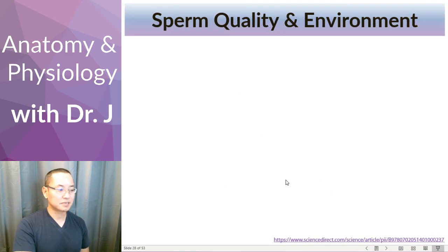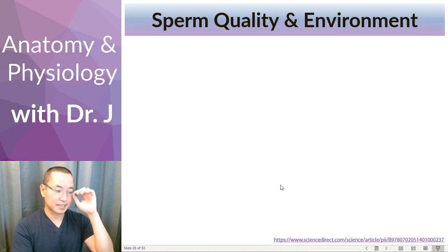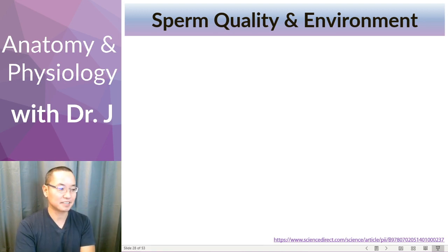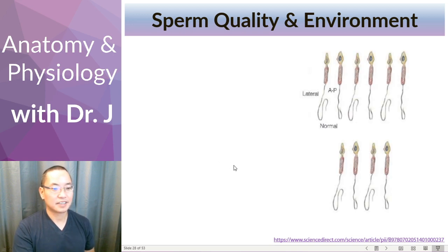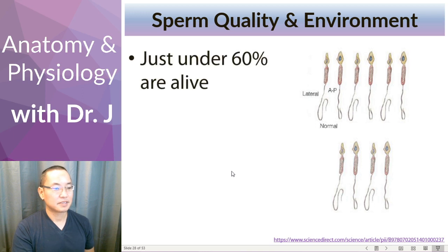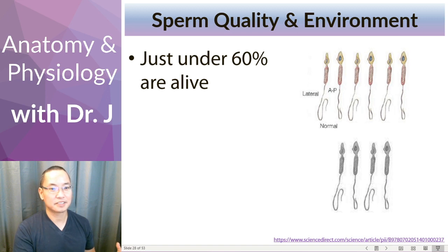Think about sperm. A man can generate a lot of sperm — in a typical ejaculation, there are about 250 million sperm. So that sounds like a lot, but why do men still have fertility problems? The thing is that of all those sperm, just under 60% in a typical ejaculate are alive, in a healthy young adult male. So only a little over half are alive.